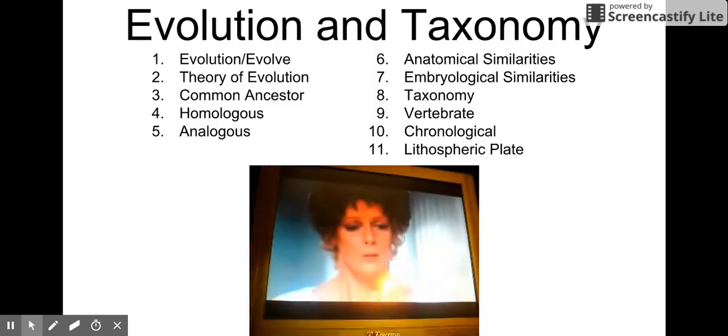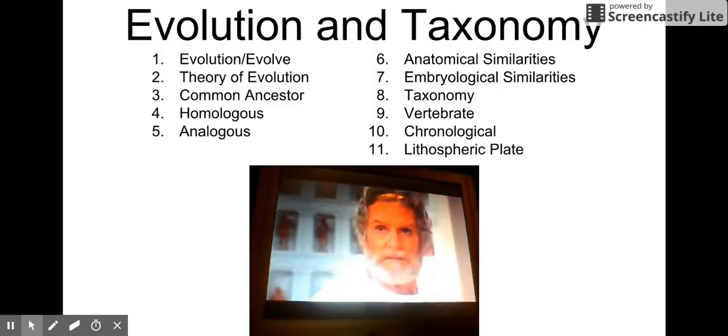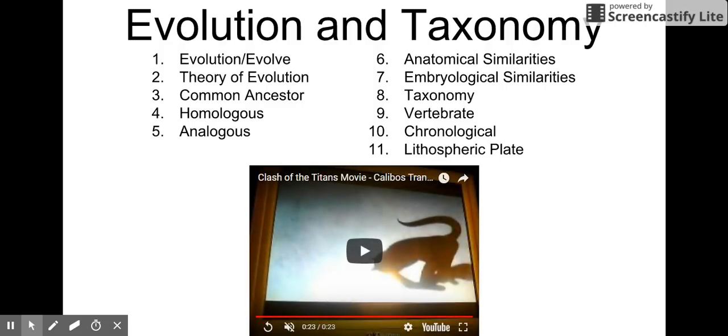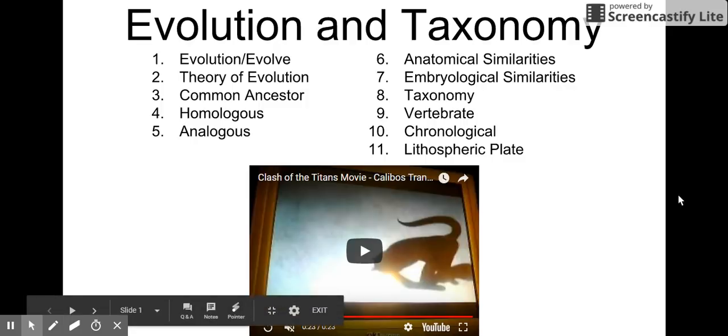When we're talking about evolution and taxonomy, what we're really talking about is changes in a species or population of organisms over a long period of time. We're talking hundreds or thousands of generations of time.